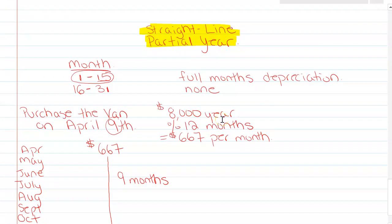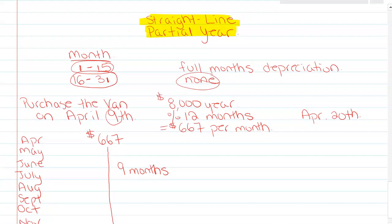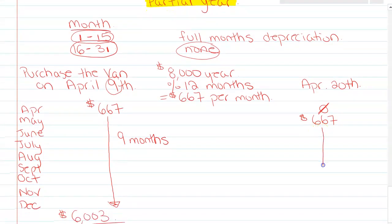Now if we take that same van and pretend we purchased it instead on April 20th, it fits into the 16th–31st period. So we don't record any depreciation for April, but we do record it for May, June, July, August, September, October, November, and December — so that's actually 8 months. 8 times $667 gives $5,336.